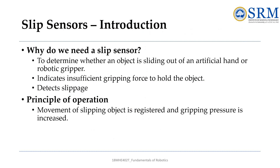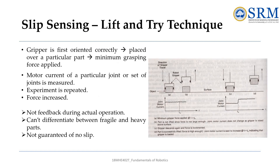Why do we need a slip sensor? We use slip sensors to check if something is slipping out of a robotic hand or a gripper. They tell us when the grip is not strong enough to hold on to an object, or if the object starts to slide. These sensors work by sensing the movement of the object when it slips and then increasing the gripping force to prevent it from falling, helping the robot hold things securely.